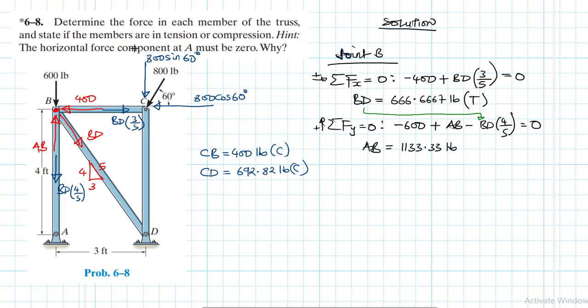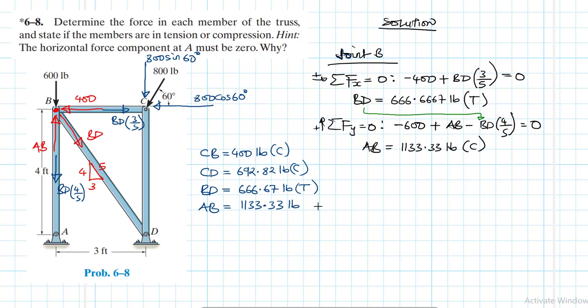To confirm: minus 600 minus 666.67 × (4/5) = minus 1133.33, so AB = 1133.33 pounds in compression. Final results: BD = 666.67 pounds in tension, AB = 1133.33 pounds in compression.